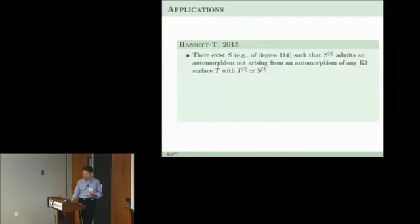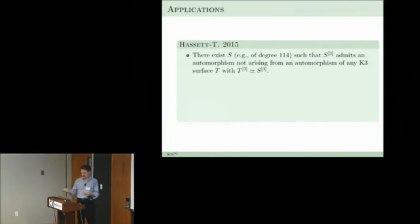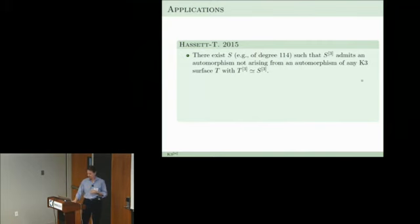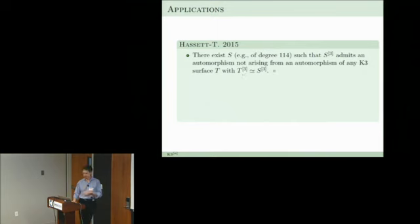Why are we doing this? It allows us to understand finer geometric questions, for example automorphisms: the description of the effective cone or the ample cone. In the theory of K3 surfaces, a lattice automorphism preserving the cone is really an automorphism of the K3. Here you can get an example of a K3 surface of very large degree such that Hilb^3(S) has an automorphism that does not come from any automorphism of any K3 surface T with Hilb^3(T) isomorphic to Hilb^3(S) — it's genuinely new to Hilb^3.